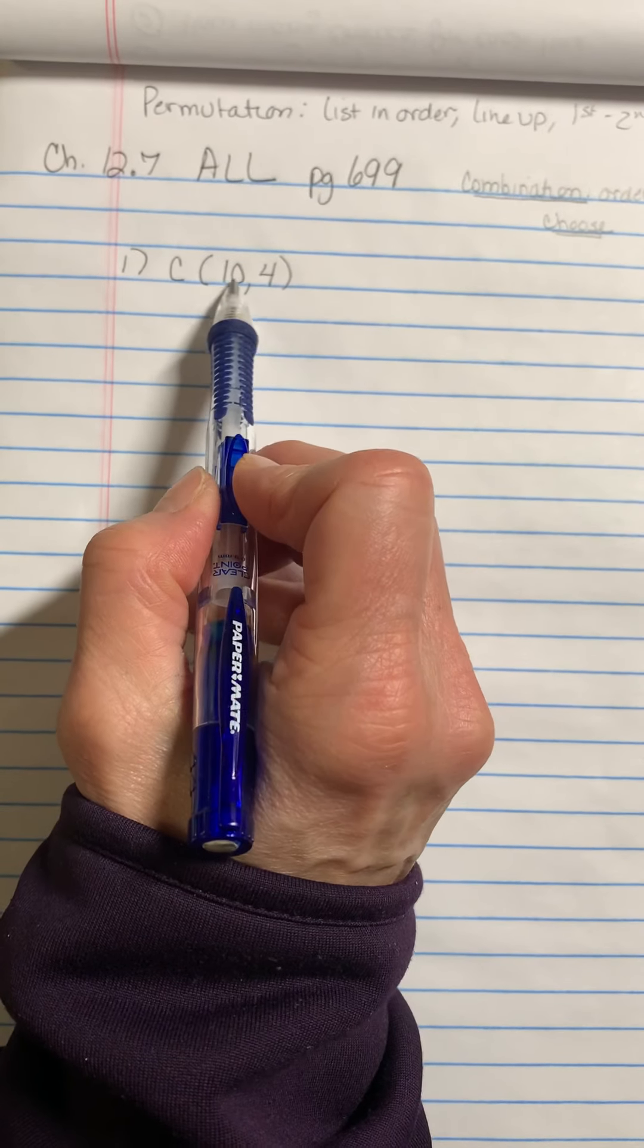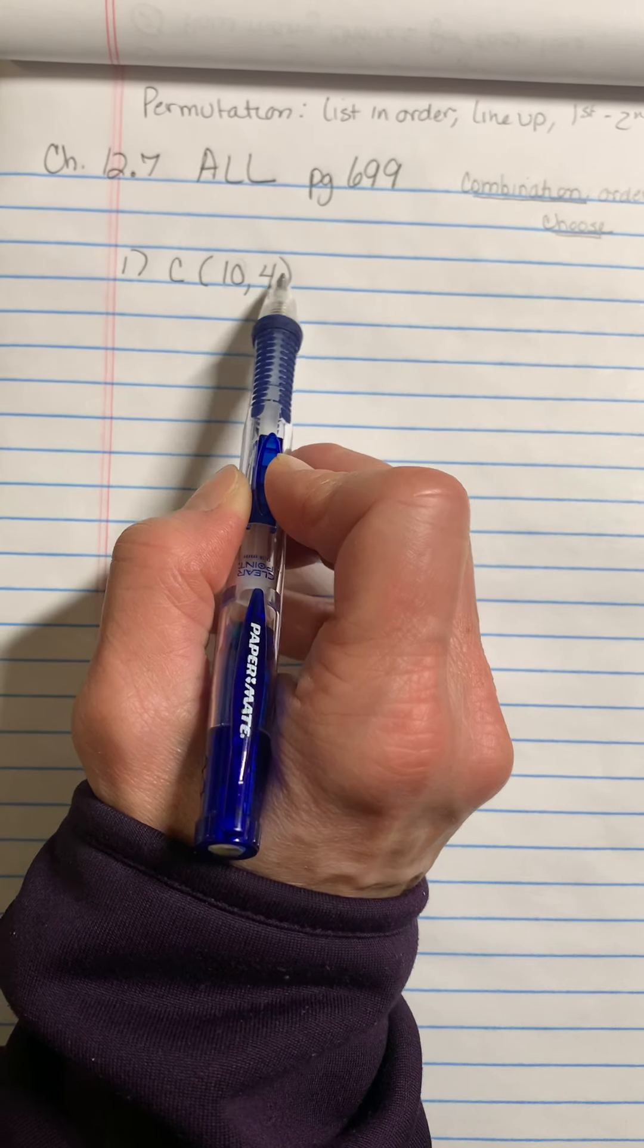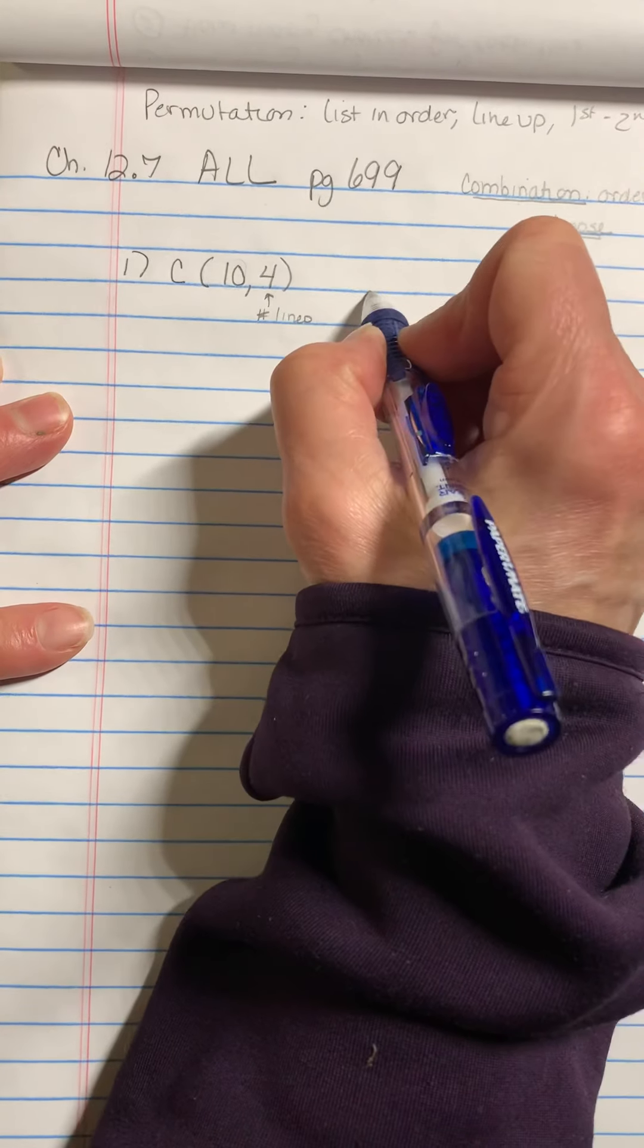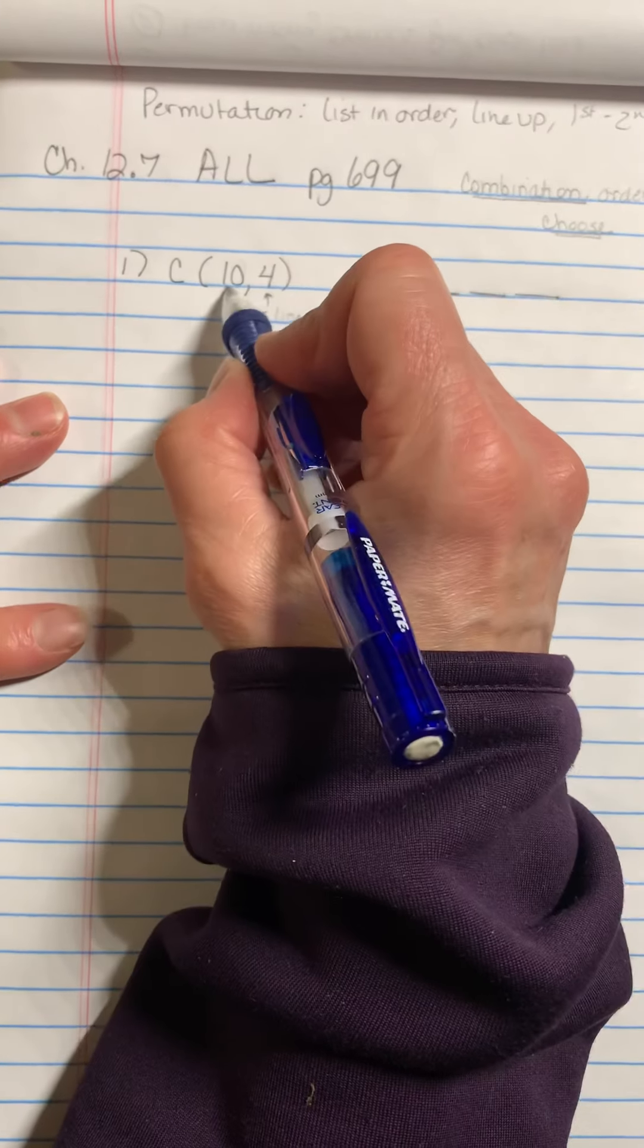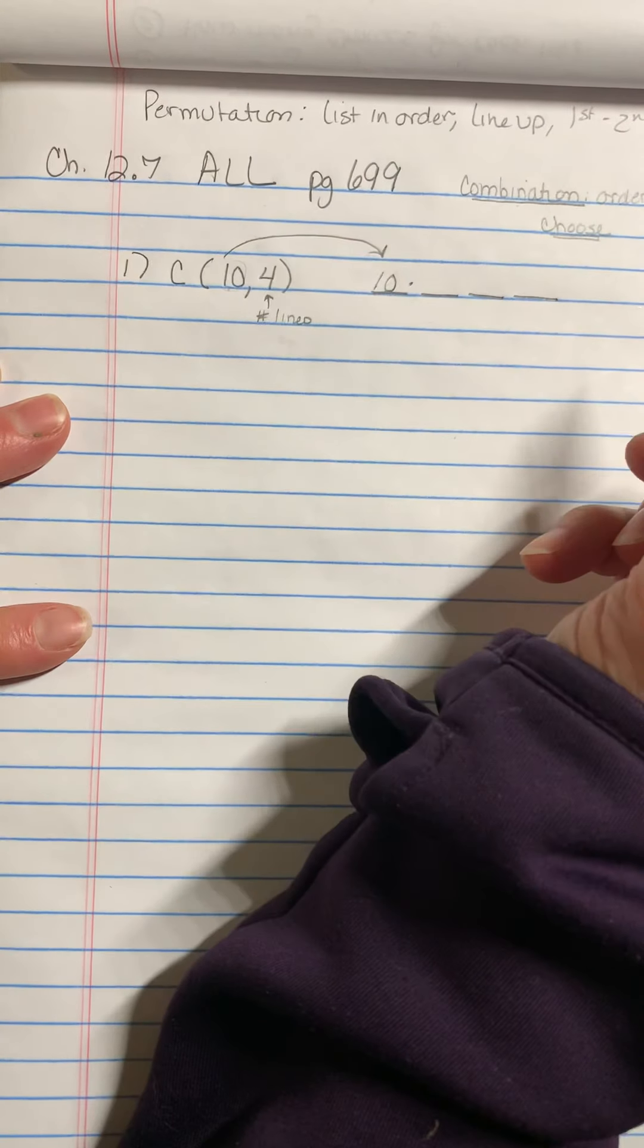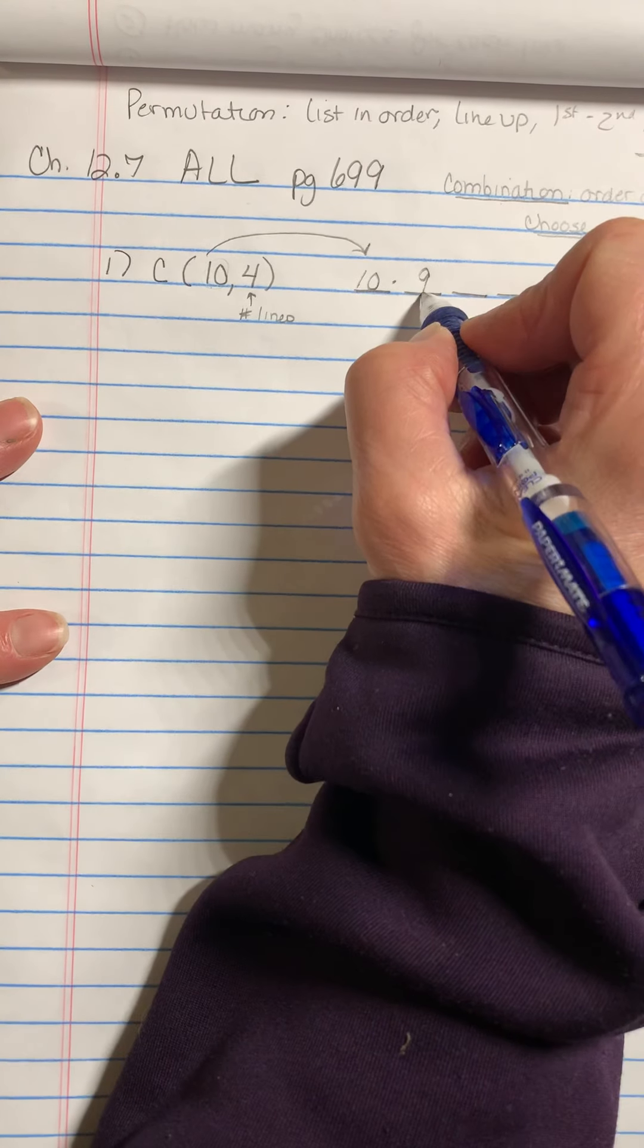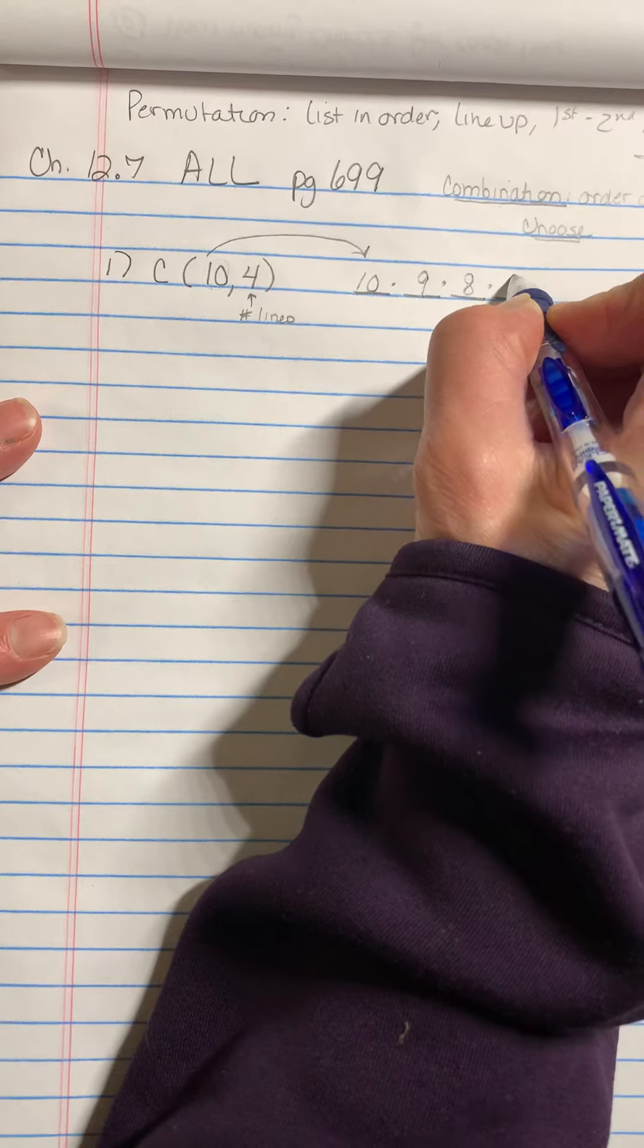It will always be the larger number followed by the smaller number. The small number tells you the number of lines you can make. So I'm going to make one, two, three, four lines. I get 10 choices for the first. Then we assume you're not going to pick ham again. So now you only have nine choices. Then we're going to assume you're not going to repeat this. So now you have only eight choices and then you have seven choices.